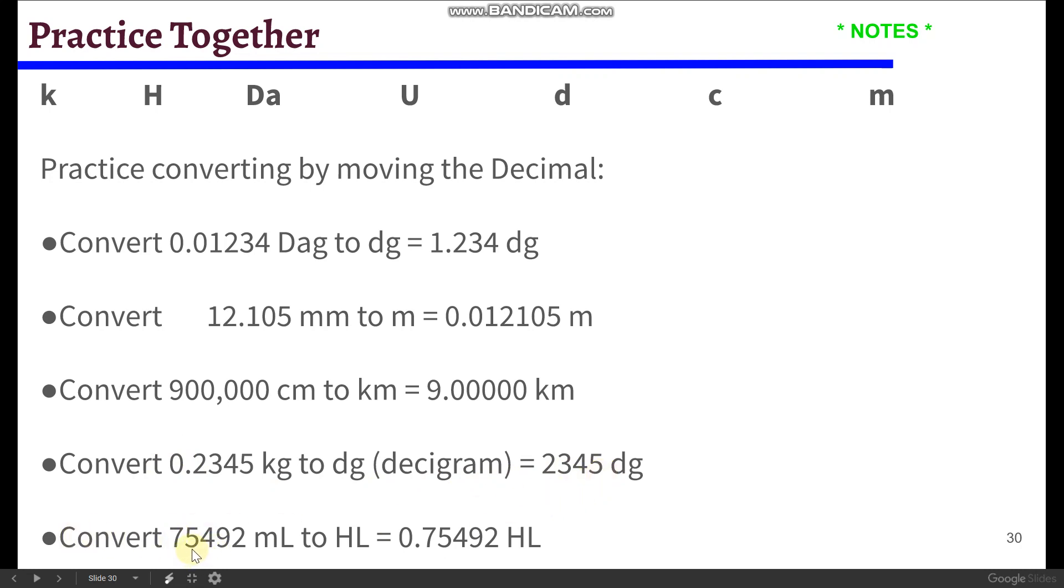Last up, we're going to convert 75,492 milliliters to hectoliters. And so as we go from milliliters to hectoliters, that's 1, 2, 3, 4, 5 spots. So then as we move the decimal, we're going to move it 1, 2, 3, 4, 5 places. And so it'll end up right in front of the 7. That's why we wrote it right there. We just add a 0 as a placeholder. So 0.75492 hectoliters.